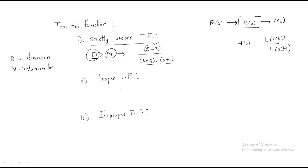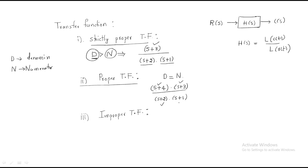The second type is the proper transfer function. For a proper transfer function, the denominator must be equal to the numerator. For example, take (s+4)(s+3) / [(s+2)(s+1)]. Here we have two zeros and two poles, so the number of poles equals the number of zeros — that's why denominator equals numerator. This is called the proper transfer function.